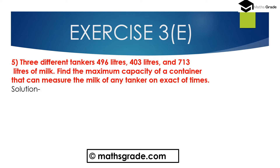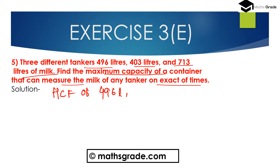Question number 5: There are 3 different tankers of 496 liters, 403 liters, and 713 liters of milk. We have to find the maximum capacity of a container that can measure the milk of any tanker an exact number of times. So we have to find the highest common factor of 496 liters, 403 liters, and 713 liters.